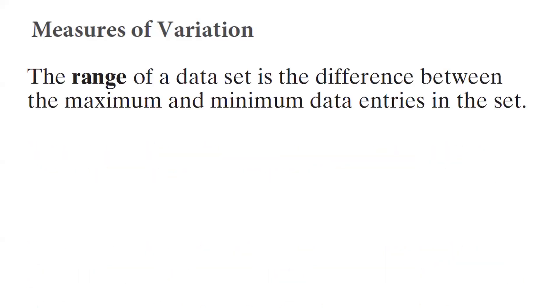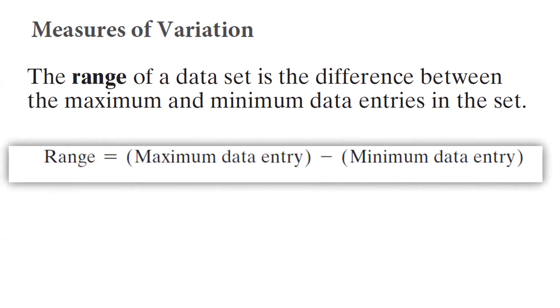How do we measure variation in our data? The very first concept is the range of the data, which basically uses the minimum and maximum value in your collection. The range of the data is maximum value minus the minimum value.